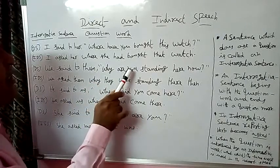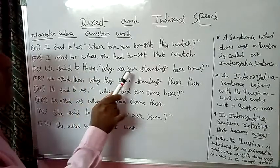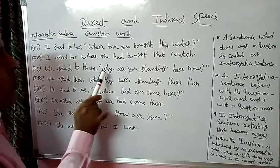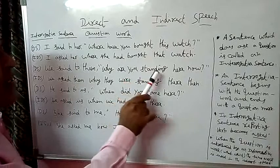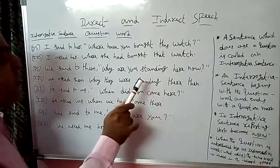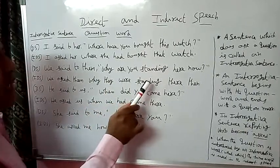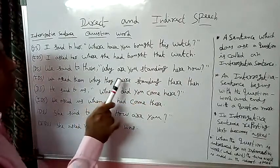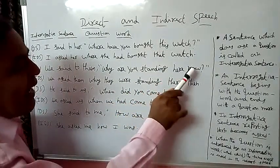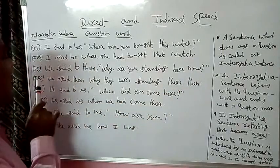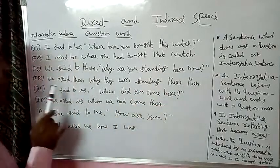The pronoun 'you' is changed according to the object. Object is 'them', so subject is 'they', and 'you' is changed to 'they'. Why are you standing here now? This sentence is in present continuous tense, so we must change to past continuous tense. Rule: Subject + was/were + verb 1 + ing + object. Subject 'they' + were. 'Here' becomes 'there' and 'now' becomes 'then' in indirect speech. Answer: We asked them why they were standing there then.